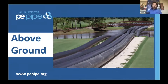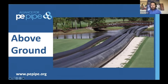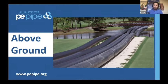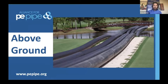Good afternoon, everybody, and welcome to another Alliance for PE Pipe Roadshow webinar. Today we are discussing above-ground or above-grade applications for HDPE pipe. Polyethylene is the material of choice for above-ground installations due to its indefinite UV resistance, and we'll get into detail about the chemical properties of poly that make it so great for above-ground applications and the specific design requirements for installing polyethylene above-ground.